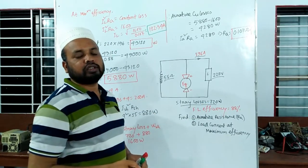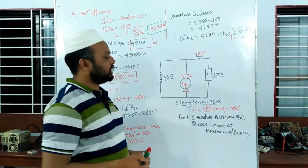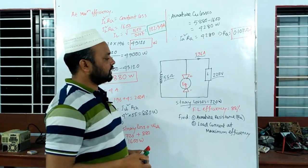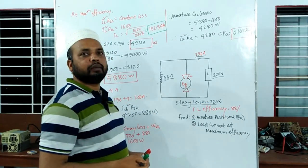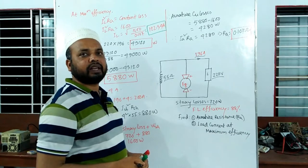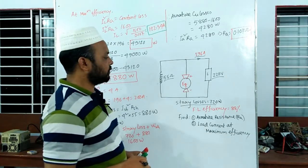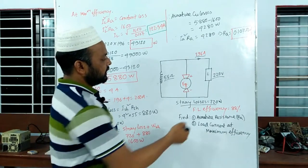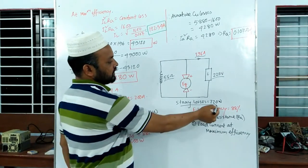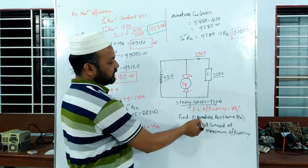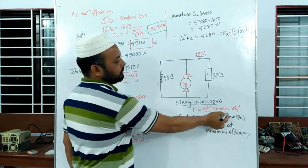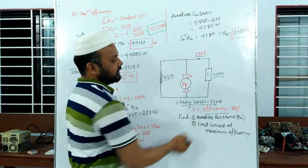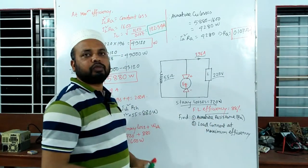This is the stray loss, and the stray loss is not high — the heat generator is a stray loss. We can say stray loss is a mechanical or magnetic loss. This stray loss is a small amount.